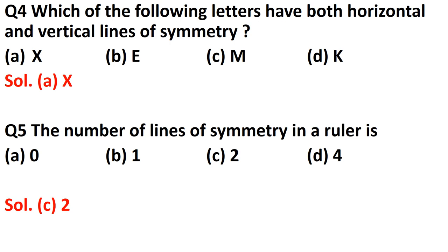Question number five: the number of lines of symmetry in a ruler — a ruler means the scale you use for measurement. First of all, see what is the shape of the ruler. It is rectangular in shape. A rectangle has two lines of symmetry, so our ruler has two lines of symmetry.